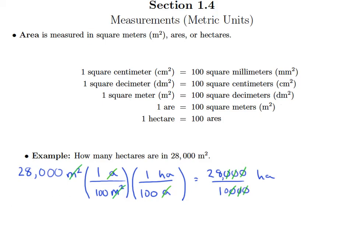When we're dividing by a power of 10, you just move the decimal point back the same number of places as zeros. There's only one zero left, so I move it back one place, giving me 2.8 hectares.